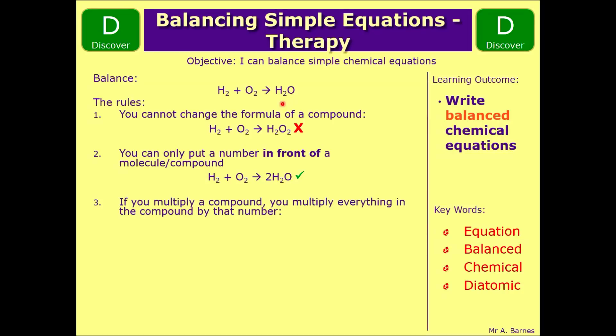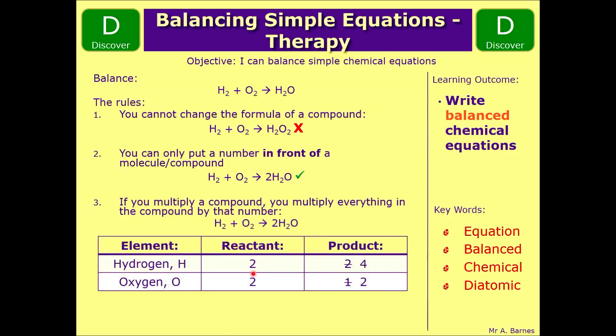Rule number three is if you put a number in front of a compound or an element, you multiply everything in front of it by that number. So although I've times the oxygen by two, I've also times the number of hydrogen by two. So two times two is four hydrogens on the right and two times one is two oxygens.